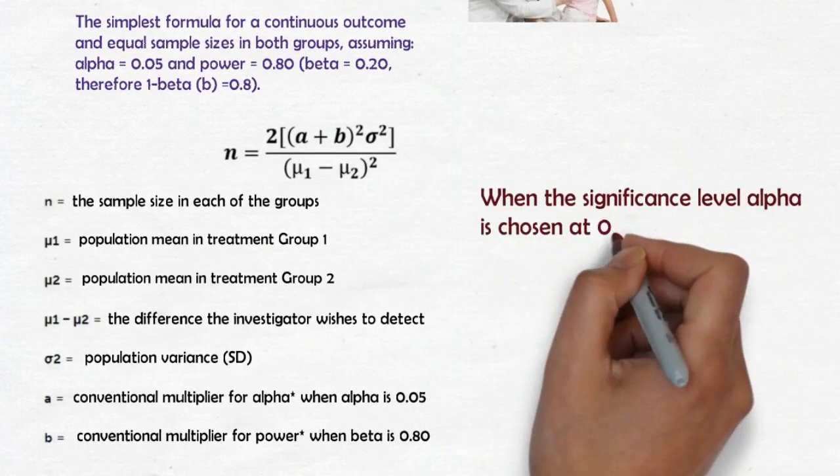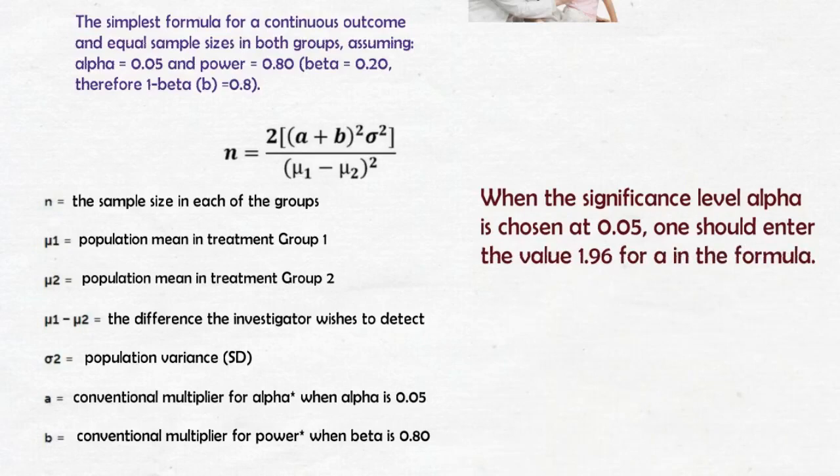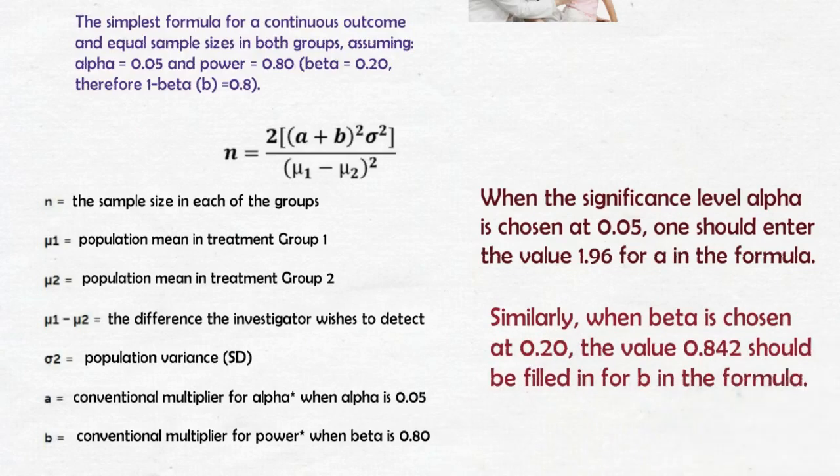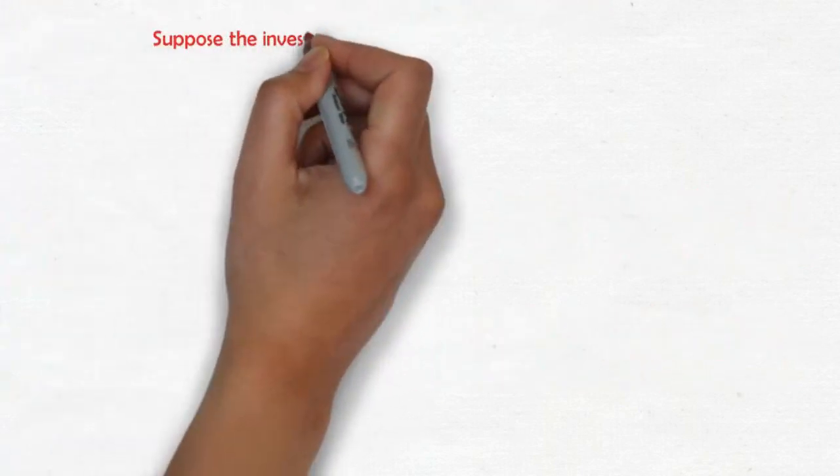When the significance level alpha is chosen at 0.05, one should enter the value 1.96 for a in the formula. Similarly, when beta is chosen at 0.20, the value 0.842 should be filled in for b in the formula.